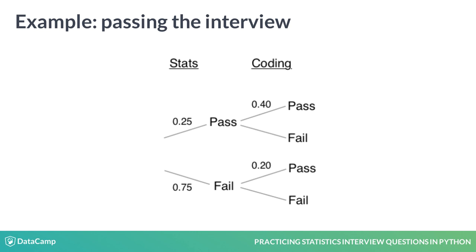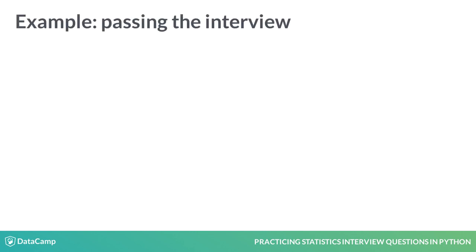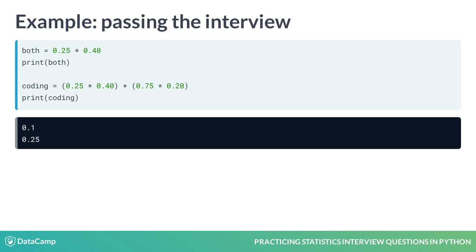By multiplying the independent events, we can compute the probability of each outcome. Once we have this, we can plug into Bayes' theorem. We can follow the top branch of the tree to get a 0.1 probability of the applicant passing both the stats and coding interviews. Next, we add the scenario where the applicant fails stats but passes coding to get the probability of passing the coding interview.